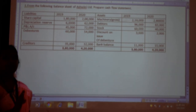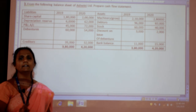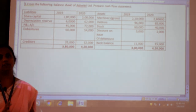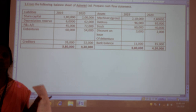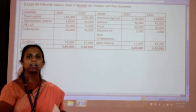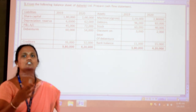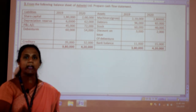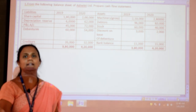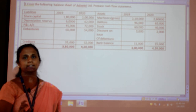Under the cash flow system, there are three main headings: operating, investing, and financing activities. Here we are talking only about cash. When we talk about cash, what things are included? Cash means what is there in your hand or pocket, and also cash equivalents — bank balance and marketable securities.